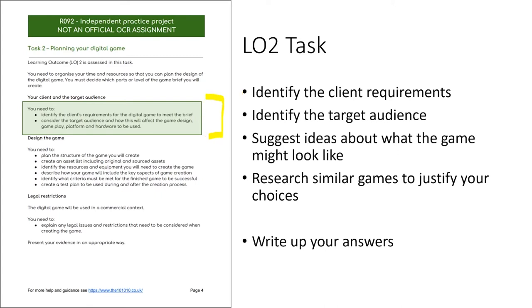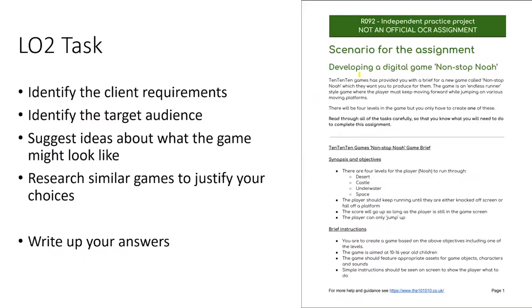The first thing we need to do is to identify the client requirements — very simply, all the things that our client wants in the game. You're going to find this information in the brief. For instance, the game must be called Non-Stop Noah. It also needs to be some form of endless runner style game. It needs to have four levels, although you'll only need to create one, and those levels must be in one of these styles here. The game itself should just involve running until someone is knocked off the screen or falls off a platform, and the score will go up so long as the player is still in the game.